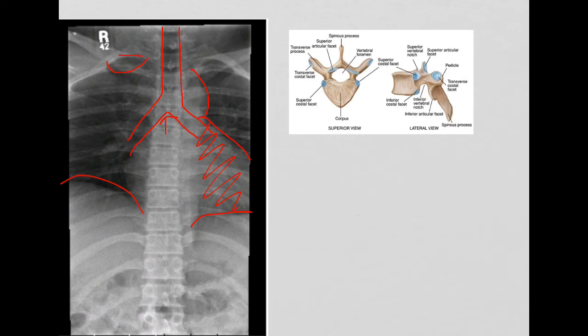We identify clavicles. And the joint spaces here are the SC joints, sternoclavicular joints. These are good indicators of rotation, just like the NHS x-ray. Pedicles are also a good indicator of whether the patient is rotated and positioned correctly, as well as spinous processes. We'll talk about that more in class.